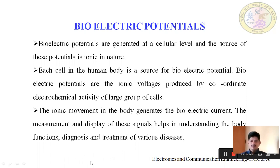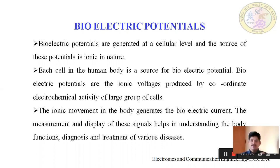It is very important — this ionic movement generating the signal and measuring that signal is critical because if you want to know the status of any organ or any functional part of the body, we need to get some signals. Similarly to the electronic field where we get signals to understand status, in the human body also we take signals to understand the status of that section. It is helpful to diagnose and treat various diseases. For example, when you go for eye testing, they give a flash of light and check the response, and that response guides them to understand the problem with the eye. Similarly, we take signals from all sections of the human body.